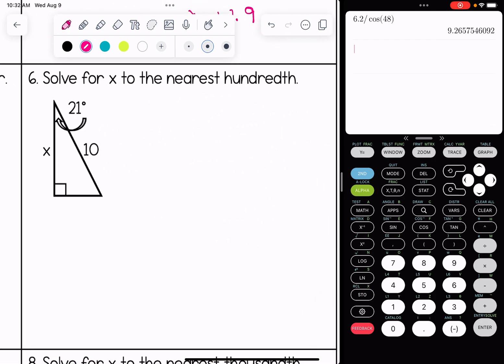Solve for x to the nearest hundredth for number six. We are going to label, and this is another cosine problem.